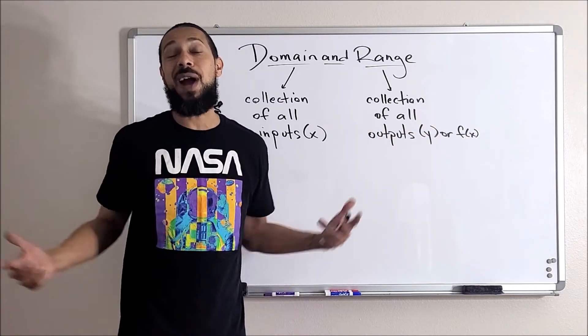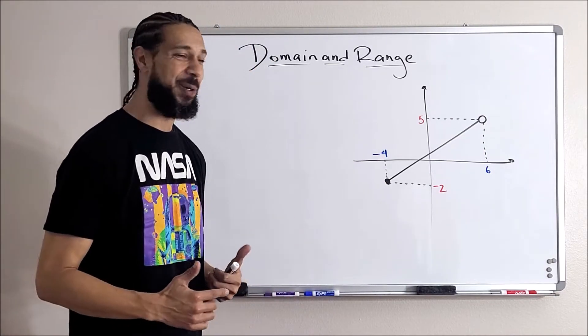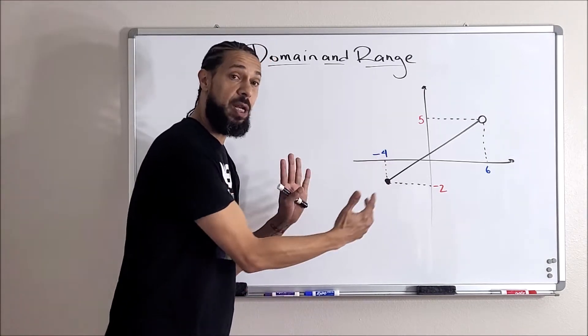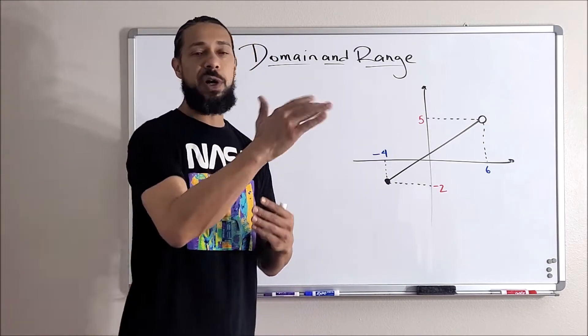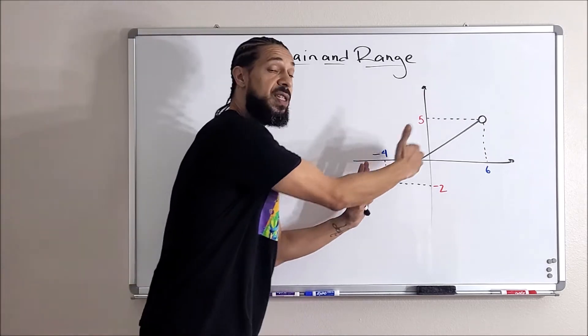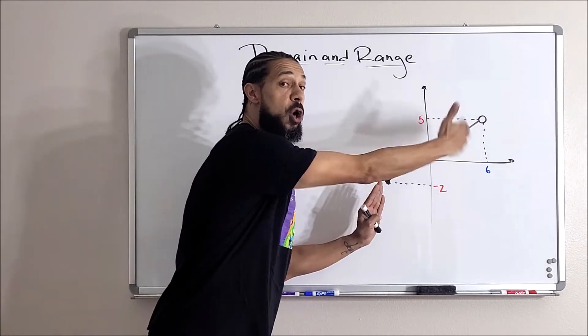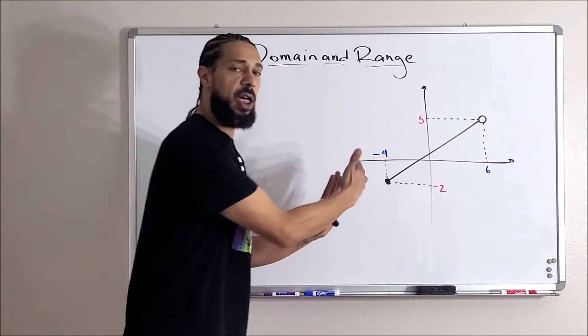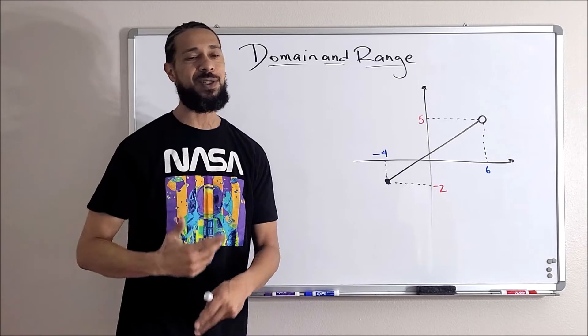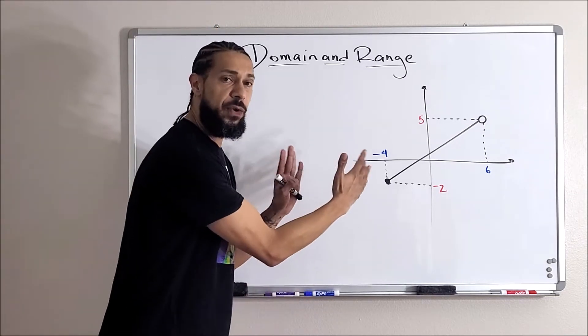Let's get a graph up here. Now we got a graph to work with. Remember the domain is a collection of all of the x values represented. When we were given a collection of points, there were only three or four x values represented. On this line or this line segment, there's a lot of x values all along this line. Remember, a line is a collection of points, so every single little dot on that line is a point and I'm not about to write all of those x values down.